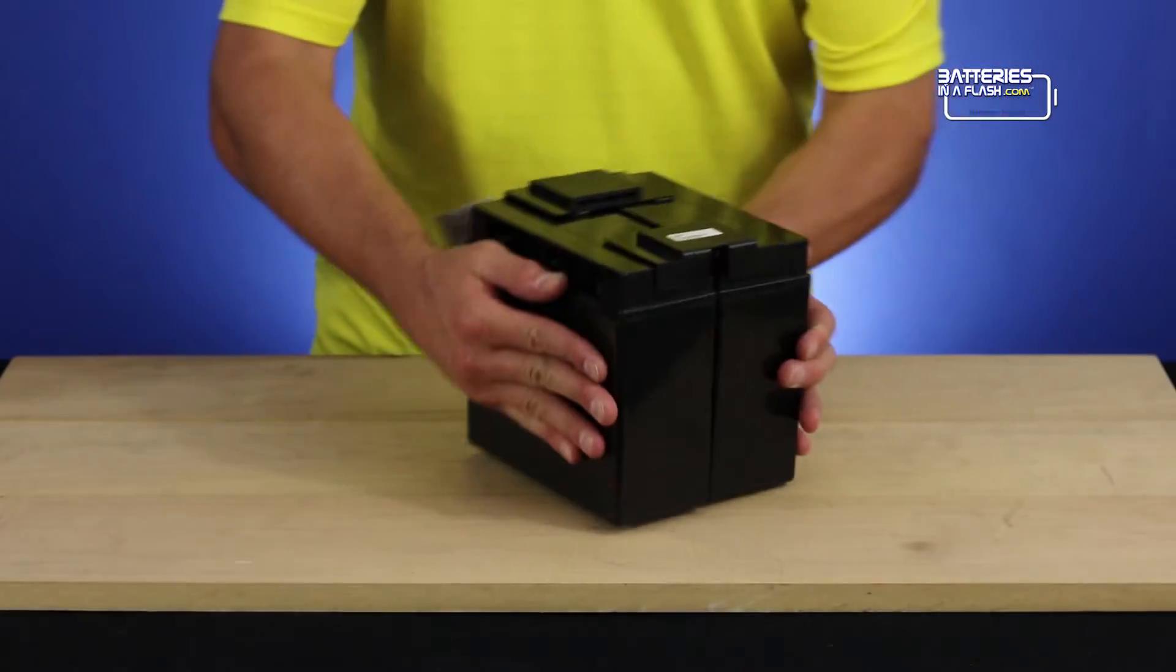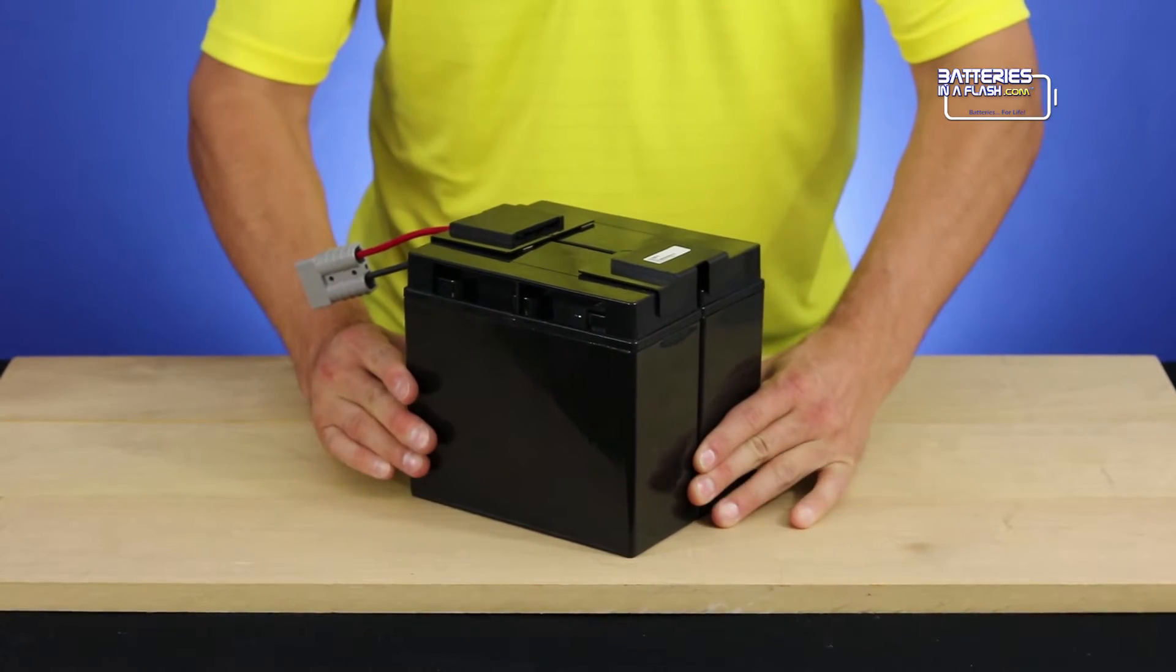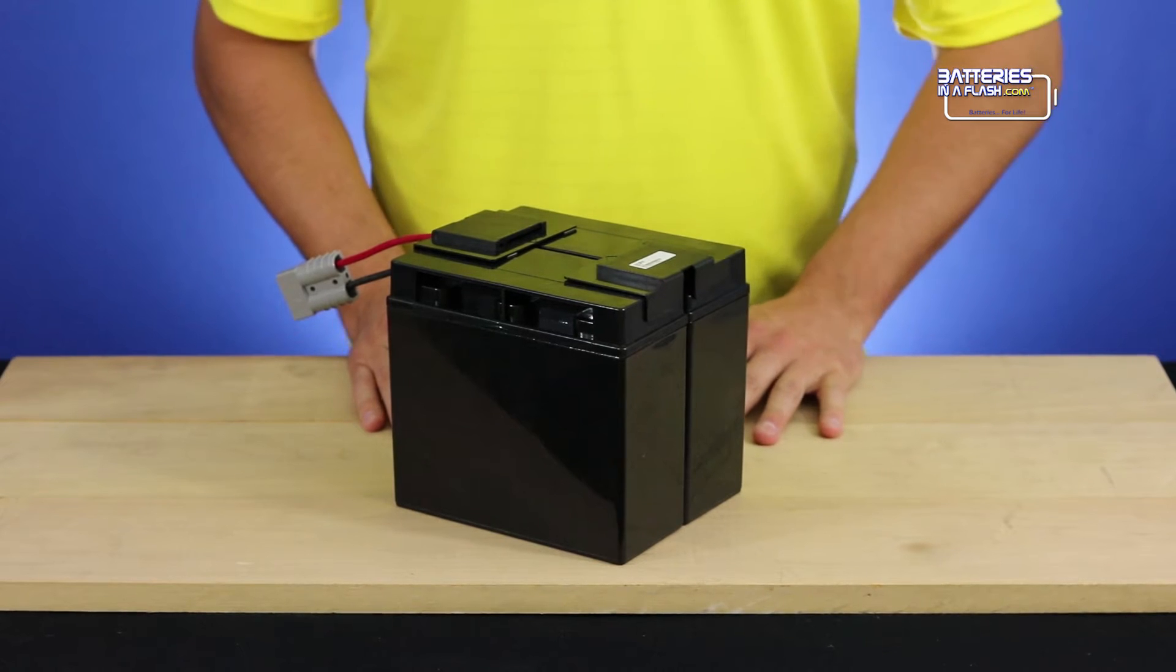First, you will need to remove the batteries from your APC unit or battery backup. Once you have done that, set the batteries on top of your workspace.